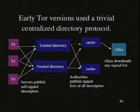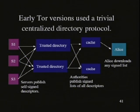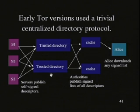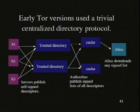So how do we do it? The first answer was directory servers. There are five places around the internet that keep track of all the servers, their addresses, and their public keys — shipped with Tor, so you know you've got the right one. All the servers write little server descriptors, sign them, and include addresses, ports, exit policies, keys, and so on. They send them to the trusted directories, which build a huge signed list saying: at this time, these were all the servers in the network. Those get cached throughout the network, and Alice fetches from a cache.